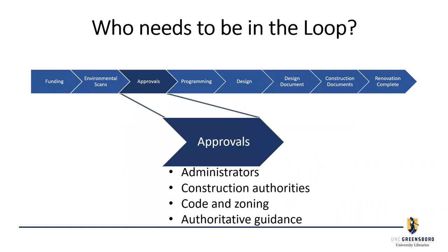The next step is approval, and we're going through that right now. The master space plan was driving a number so we could see what was needed and present to the chancellor what we need to renovate and expand the library. It worked — he approved it and made it our number one capital priority for this campus. That then went to the state legislature.